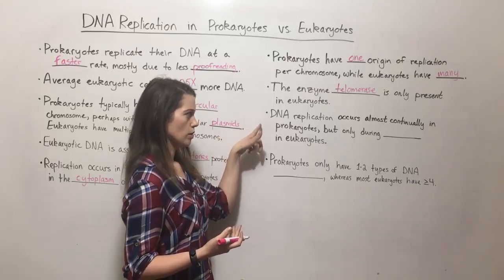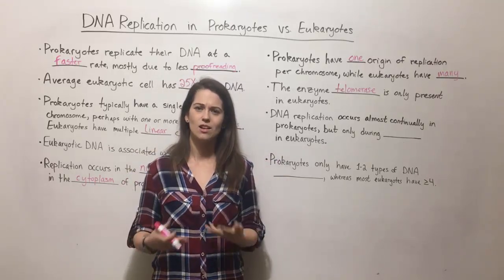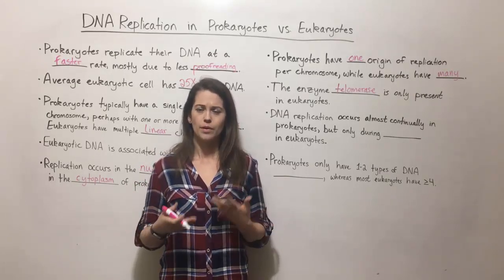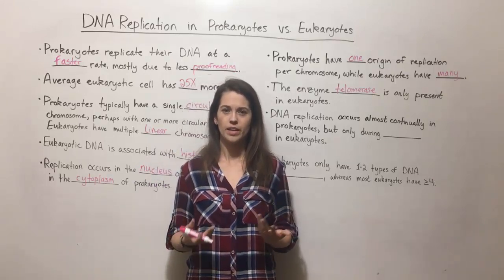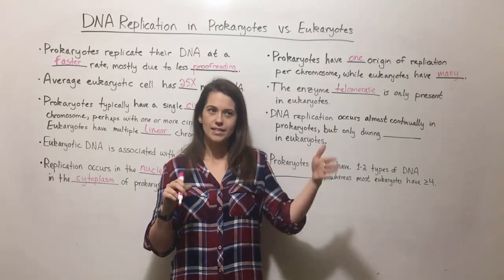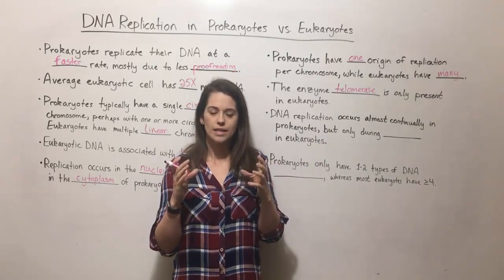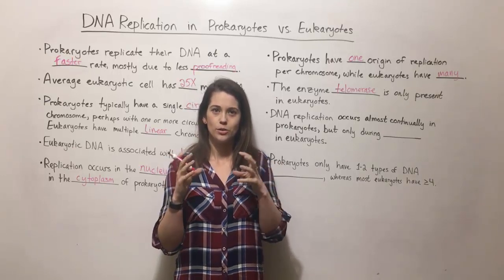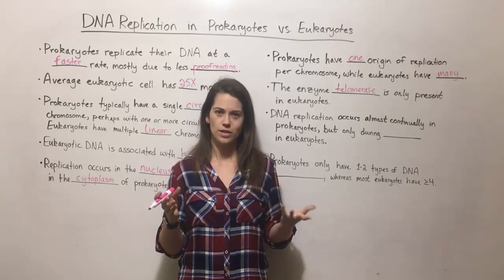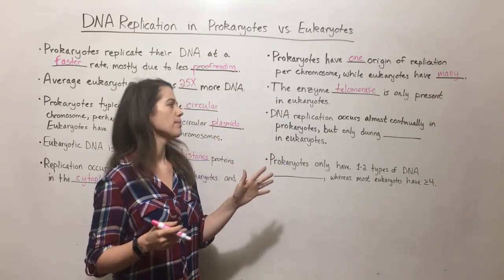DNA replication occurs almost continually in prokaryotes. Bacteria are almost constantly dividing — as long as there are enough nutrients and the environment is favorable, they'll divide pretty much continually. In fact, some bacteria like E. coli can even start the next cell division before the current one ends. Before a cell division finishes, the two cells that haven't even fully separated yet can already be replicating their DNA, getting ready for the next cycle.